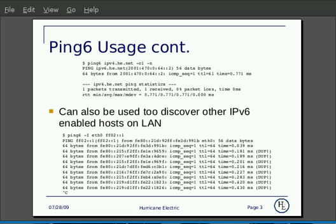If your LAN segment has auto-configuration and a /64, because you're getting back their link-local from the remote host, you can easily construct what their full IPv6 address would be in that situation.